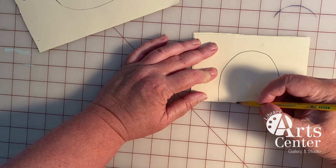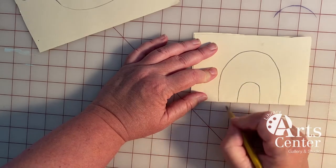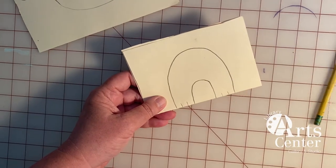Then inside of that U, I'm going to draw another upside down U, just like that. I might put some little toes right here. Now I'm going to cut these pieces out.